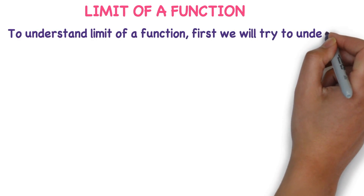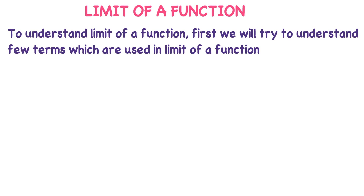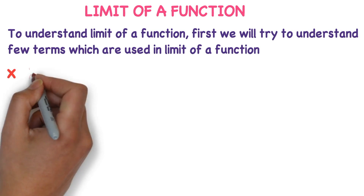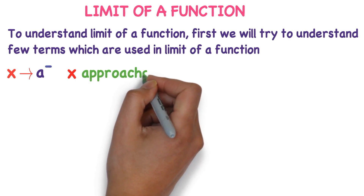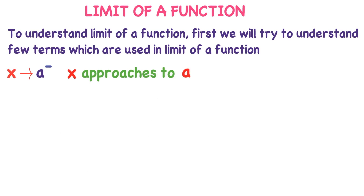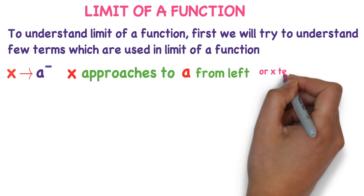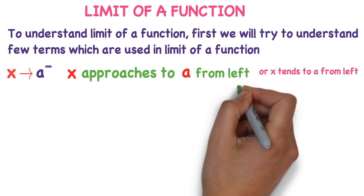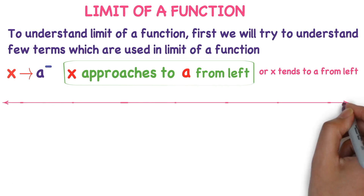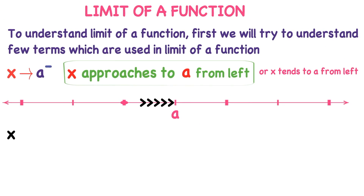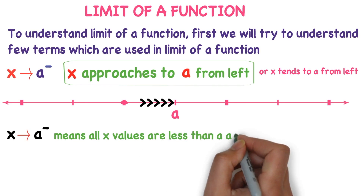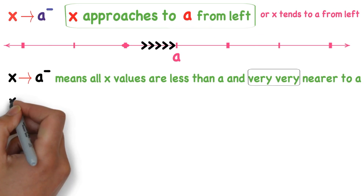To understand limit of a function, we will first try to understand a few terms used in it. First: x tends to a minus. What does this mean? We read it as 'x approaches to a from left.' I will explain this on the number line. Here, 'a' is some real number. X approaches to a from left means all x values are less than a and very, very nearer to a. I will explain this with an example.